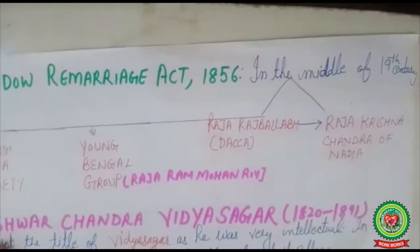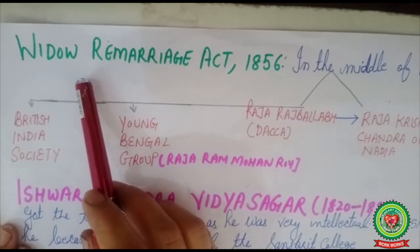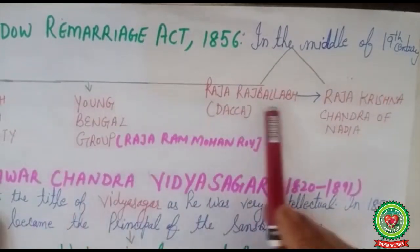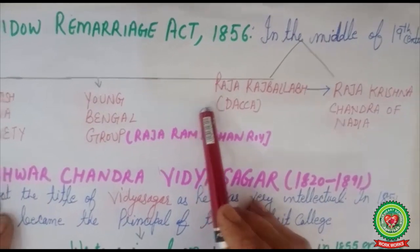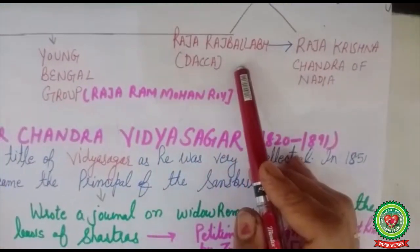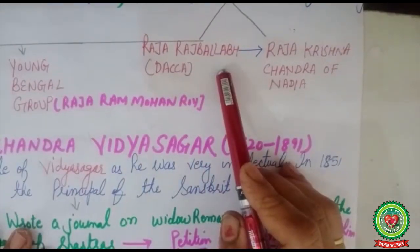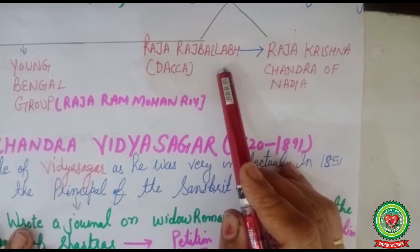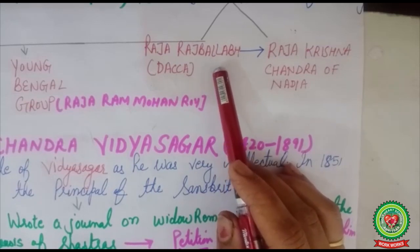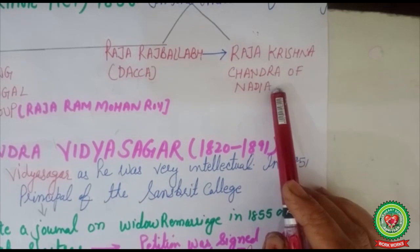Along with the sati system, another social problem was whether widows should be allowed to remarry. The Widow Remarriage Act was passed in 1856. In the mid-19th century, many organizations and persons worked in favor of widow remarriage, such as the British India Society, the Young Bengal group started by Raja Ram Mohan Roy, and Raja Raja Bhallab of Dhaka. They wanted eradication of child marriage and permission for widows to remarry. However, conservatives like Raja Krishna Chandra of Nadia opposed it, so these efforts were in vain.